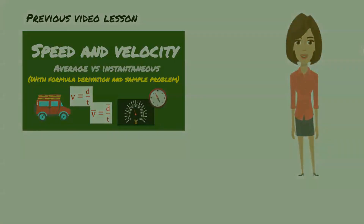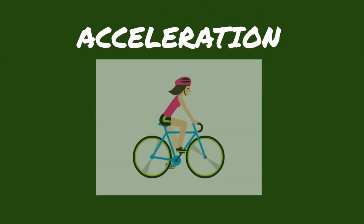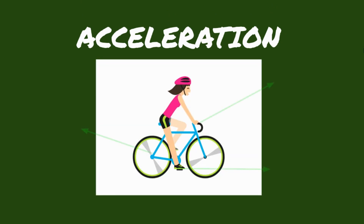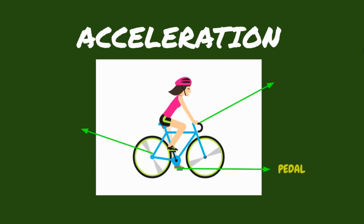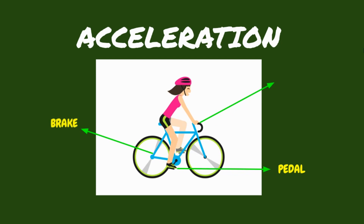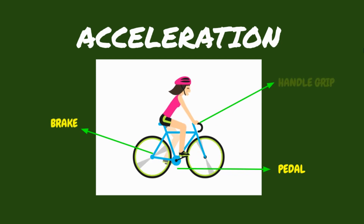Today, we will learn about acceleration. If you are confused about what acceleration is, just think of a bike. A bike has three main parts: it has a pedal to help you accelerate, a brake to stop the bike, and a handlebar grip to change the direction.